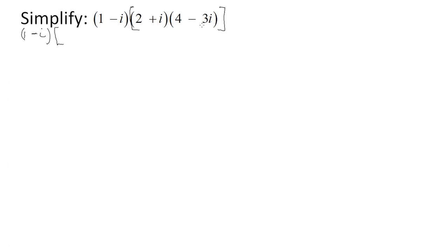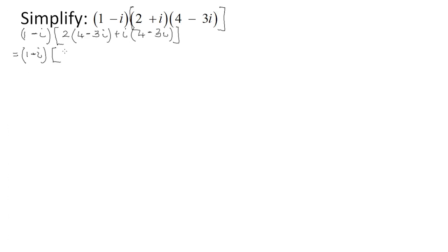I'm going to multiply using the distributive law, which is exactly the same as the FOIL method. You take the real part and multiply it with the second complex number, then take the imaginary part and multiply it with that complex number. This gives us (1 − i) × [2 × 4 = 8, minus 6i, plus 4i, minus 3i²], closing the bracket.